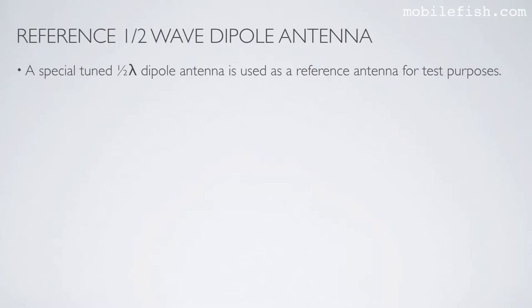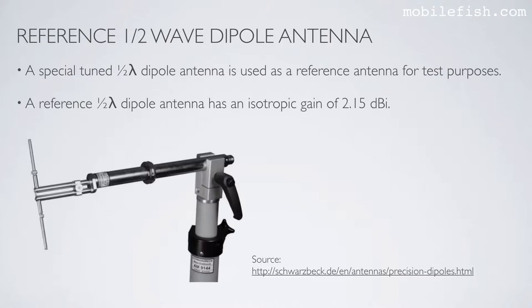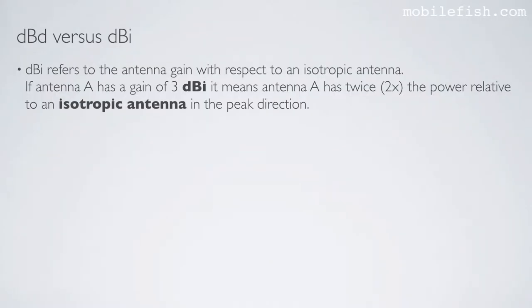A special-tuned half-wave dipole antenna is used as a reference antenna for test purposes. A reference half-wave dipole antenna has an isotropic gain of 2.15 dBi. dBi refers to the antenna gain with respect to an isotropic antenna. If antenna A has a gain of 3 dBi, it means antenna A has twice the power relative to an isotropic antenna in the peak direction.